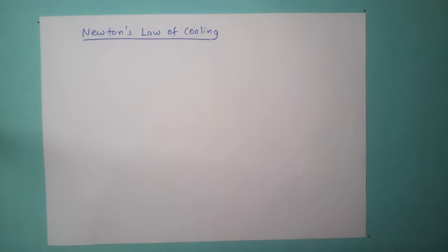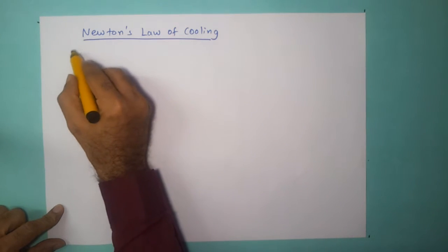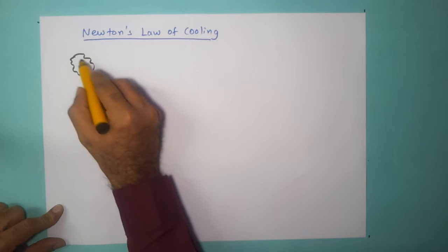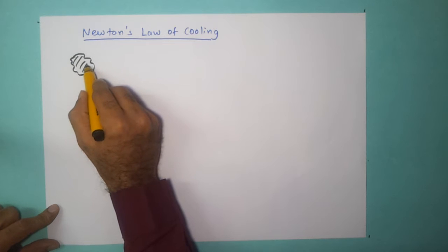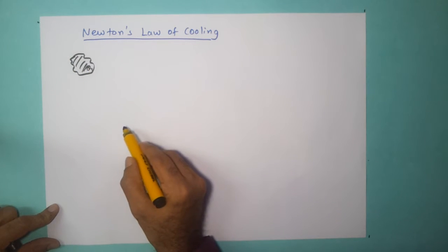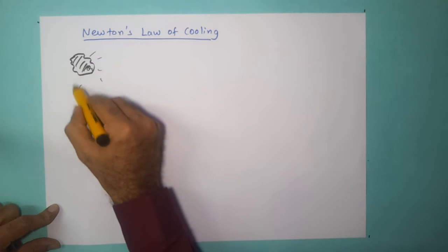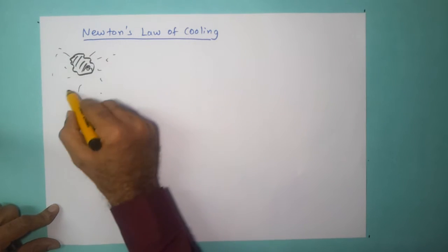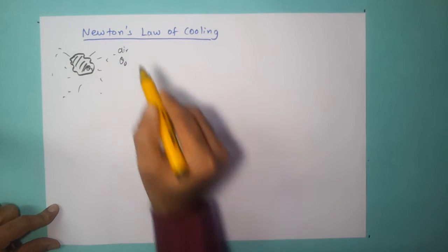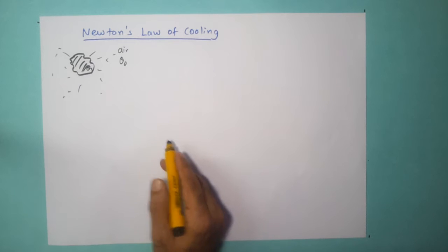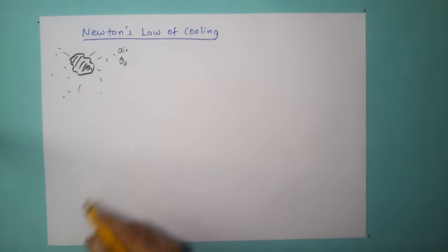We continue our discussion on radiation of heat and the next law we are going to look at is what is known as Newton's law of cooling. Let us assume that we have an irregular shaped object at some temperature. The temperature of this object is theta 1 at a particular time, and this is radiating heat out to the surroundings, which is air at temperature theta 0. Quite obviously, the air temperature is lesser than theta 1.